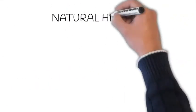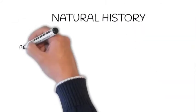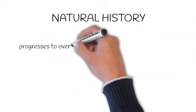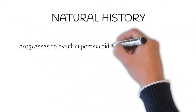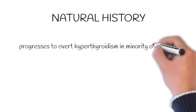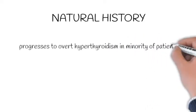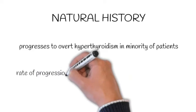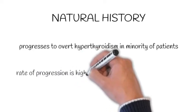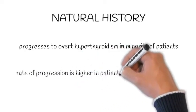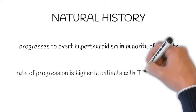Natural History. Subclinical hypothyroidism progresses to overt hypothyroidism in a minority of patients. The rate of progression to overt hypothyroidism is higher in persons with TSH levels less than 0.1 mIU per litre.